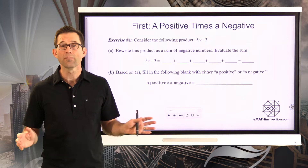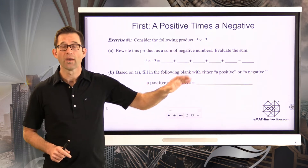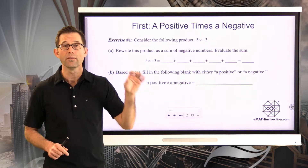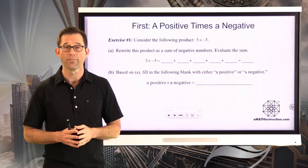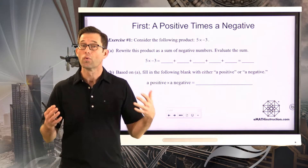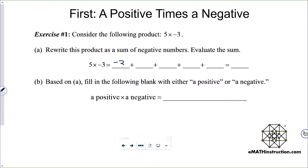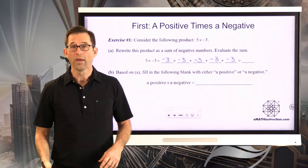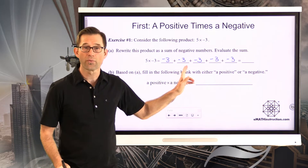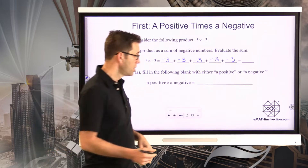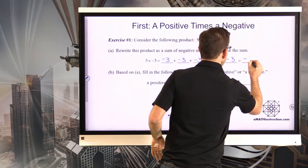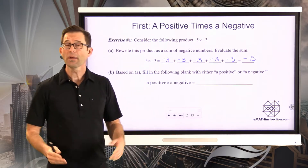This is extremely important. If I had 5 times 3, that literally means I have 3 plus 3 plus 3 plus 3 plus 3 — five threes all being added together. Therefore, 5 times negative 3 really means negative 3 plus negative 3 plus negative 3 plus negative 3 plus negative 3. That gives us negative 15.